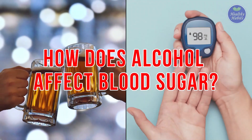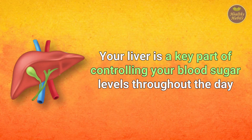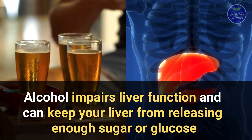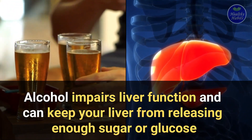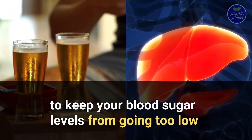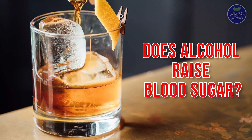How does alcohol affect blood sugar? To understand how alcohol affects blood sugar, it's important to know how the liver works. Your liver is a key part of controlling your blood sugar levels throughout the day. Alcohol impairs liver function and can keep your liver from releasing enough sugar or glucose to keep your blood sugar levels from going too low.